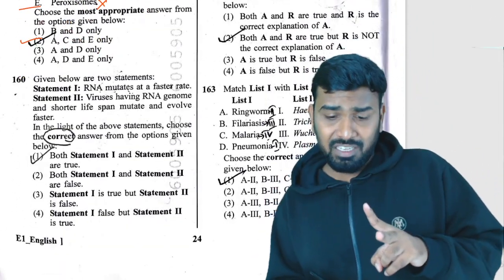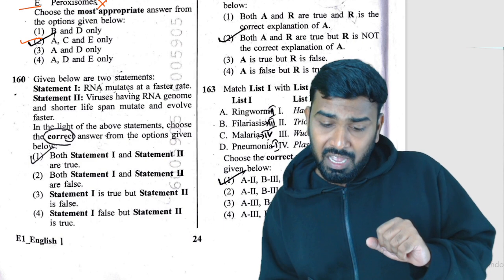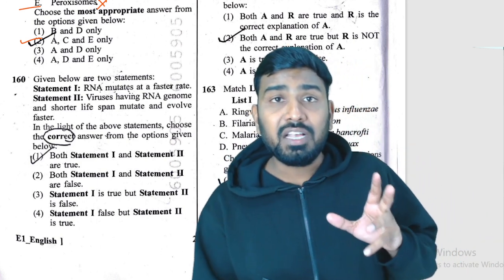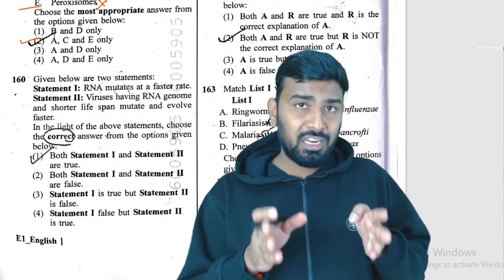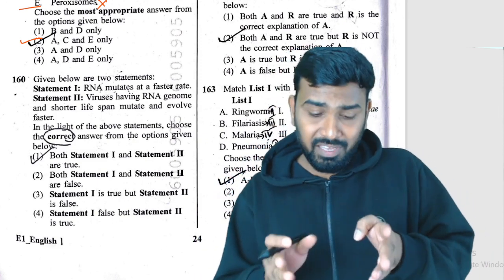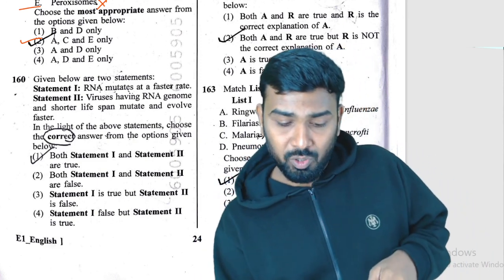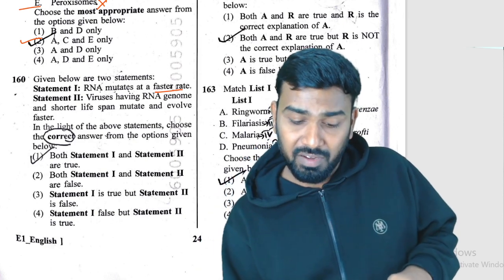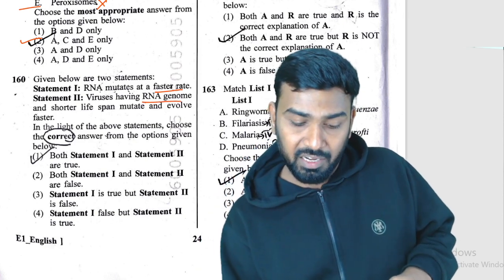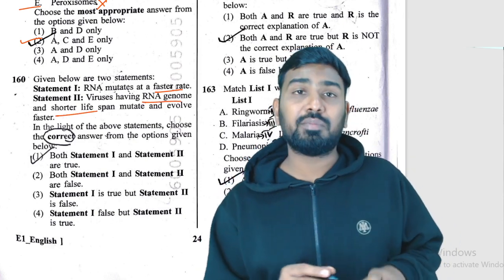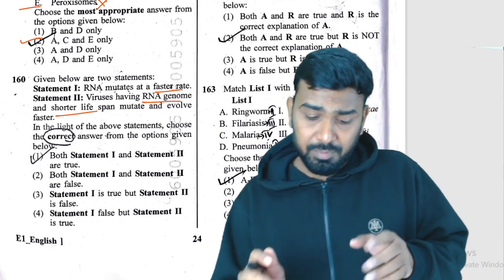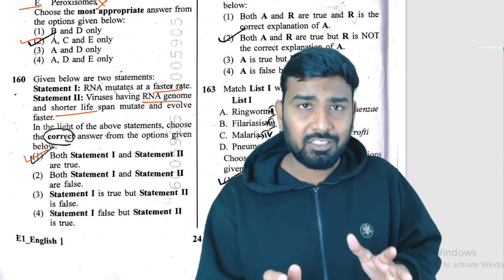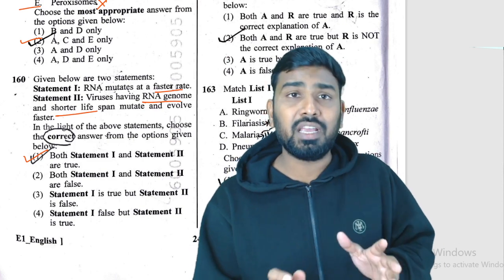Question 160: RNA mutates at a faster rate — that is a direct NCERT line. That is why viruses having RNA genome have a short life. Both statement one and statement two are correct. So Q160 answer: both statements are correct.